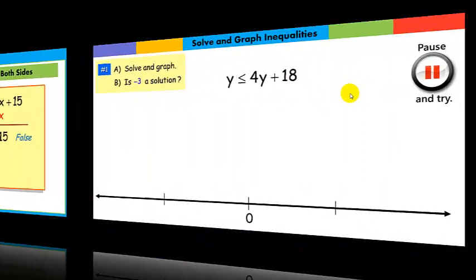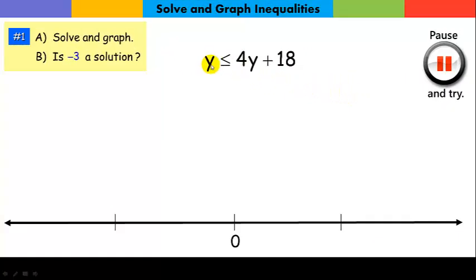Okay, so let's work with a couple problems that have variables on both sides. Now, before you try this, I'm going to ask you to solve and graph, but I'm also going to ask you: is negative 3 a solution? Go ahead and give it a shot.